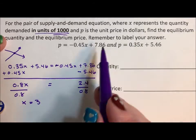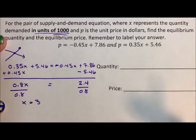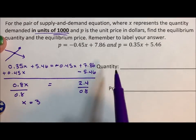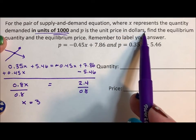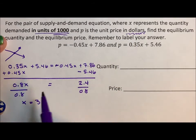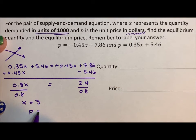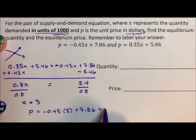So I'm going to put the 3 into both equations and make sure I get the same price point out because p is in dollars. Okay. So p equals negative 0.45 times 3 plus 7.86. If I throw this into my calculator, I get 6.51.